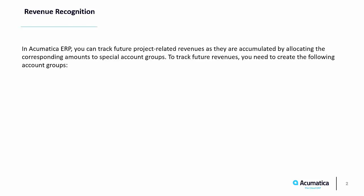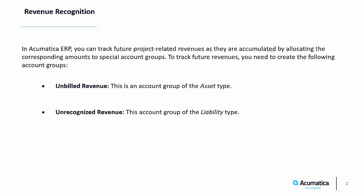To track future revenues, you need to create two new account groups. Unbilled revenue — this is an account group of the asset type. Unrecognized revenue — this account group is of the liability type. Each time you run the allocation, a transaction will be created that will debit the account group used for unbilled revenue and credit the account group used for unrecognized revenue for the same amount. Later, you will recognize this amount as revenue and charge it to the customer when you are running the project billing.